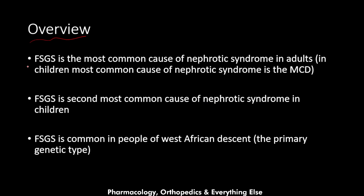FSGS is the most common cause of nephrotic syndrome in adults. Remember, in children the most common cause of nephrotic syndrome is minimal change disease (MCD). FSGS is the second most common cause of nephrotic syndrome in children, so it affects all ages — most common in adults, second most common in children.